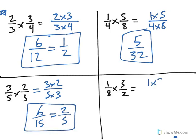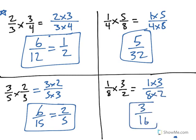And then 1 times 3, 8 times 2: 1 times 3 is 3, 8 times 2 is 16. That is how you multiply two fractions together when you're just completing drills.